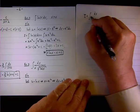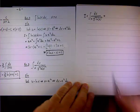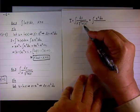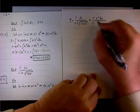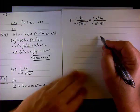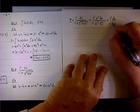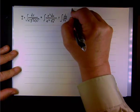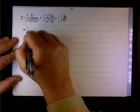After substituting, the denominator has x as e to the u, and the square root of the natural log of x becomes square root of u. So we have e to the u times square root of u in the denominator, and the e to the u cancels, leaving du divided by square root of u.